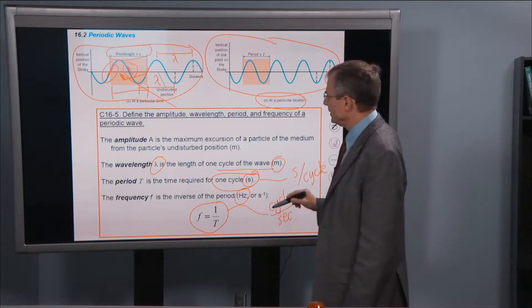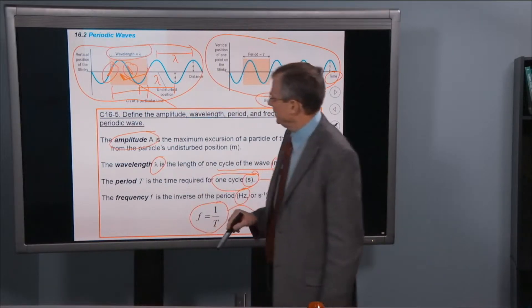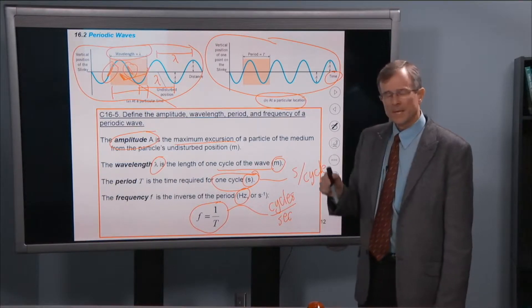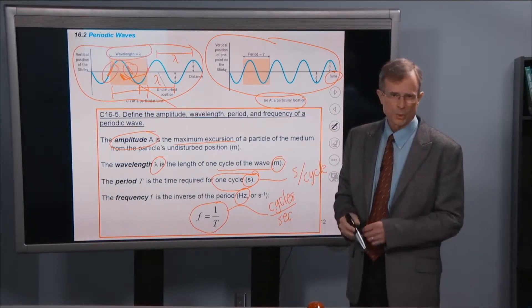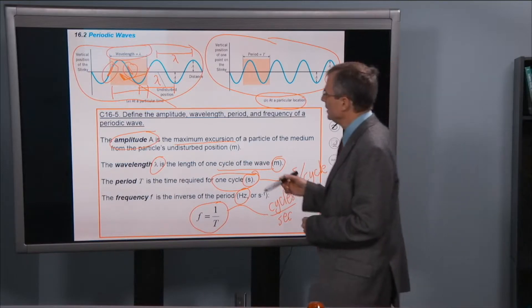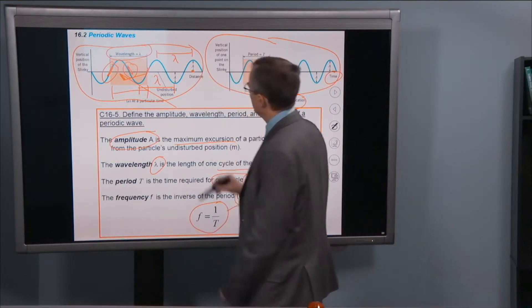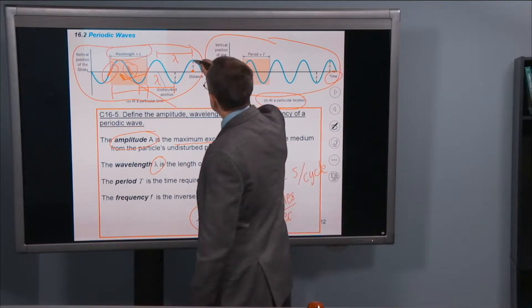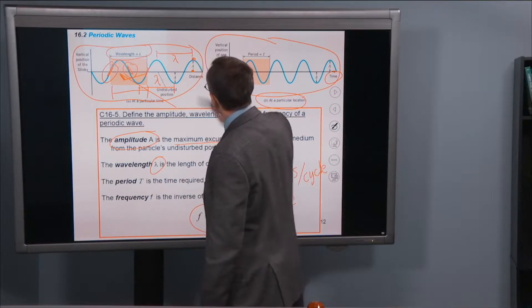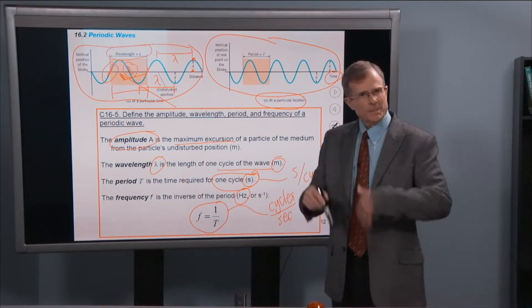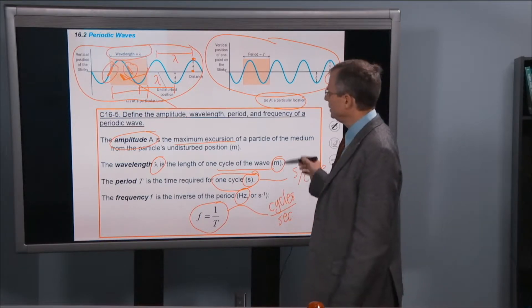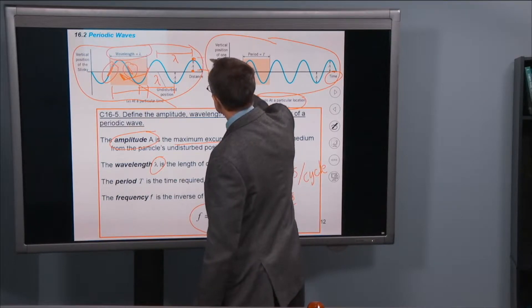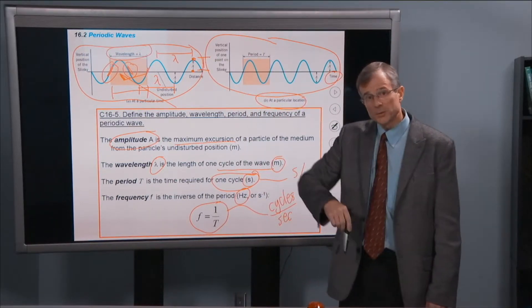Now what's the only thing left is the amplitude that we need to define. The amplitude is the maximum excursion of a particle from the particle's undisturbed position. So for example, this point right here in the wave, there's its undisturbed position. It's along the straight line. Here's its maximum excursion, its maximum displacement from its undisturbed position. And the amplitude is the distance between those two things, right there. Or we could look on the other side as well.